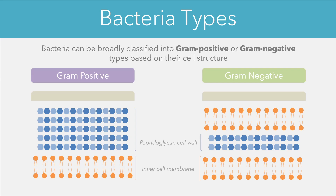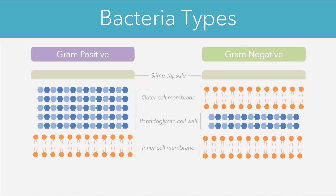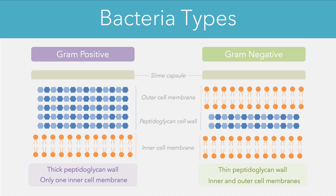This is important when thinking about gram staining. Gram negative cells also have an outer cell membrane which basically encapsulates the cell wall, while this is missing in gram positive cells. Finally, both groups also have an outer slime capsule which helps to provide an extra layer of covering. So the main differences are that a gram positive cell has a thick peptidoglycan wall and only one inner cell membrane, while gram negative cells have thin peptidoglycan cell walls and both inner and outer cell membranes.